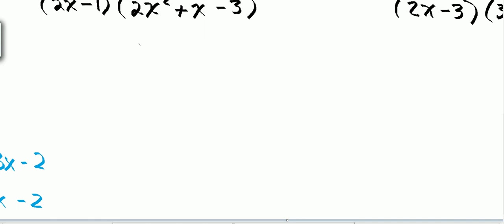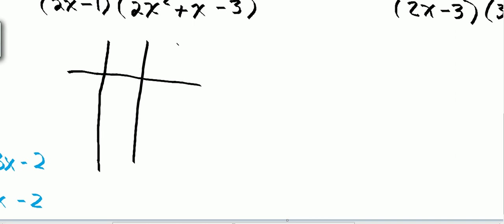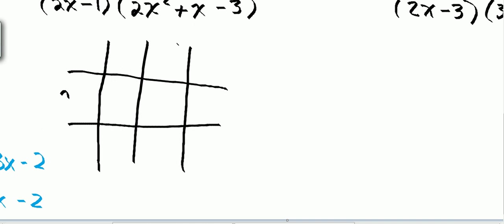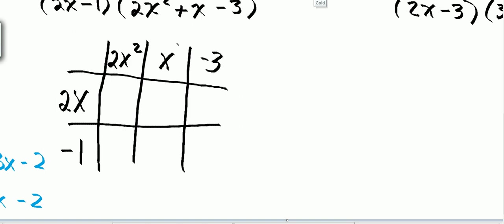So we're going to make our lattice again. I take my first polynomial and plug it in vertically: 2x and negative 1. And then my three-term polynomial I'll plug in here: 2x squared, x, and negative 3. And I multiply my rows times my columns.